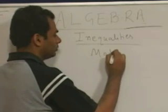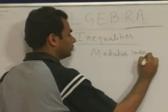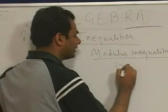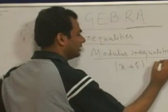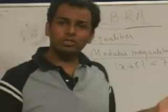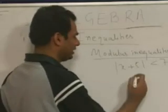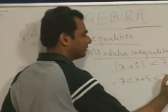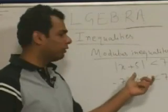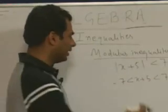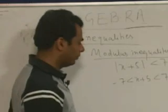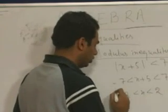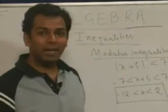Now let us move to modulus inequalities. For example, if |x + 5| < 7 — remember one thing: whenever there is a less-than sign, you can write that x + 5 lies between −7 and +7. Subtracting 5 from all sides gives −12 < x < 2. So the value of x lies between −12 and 2.